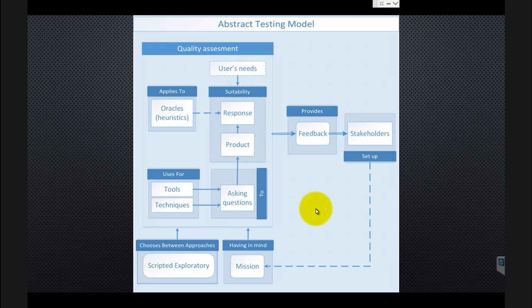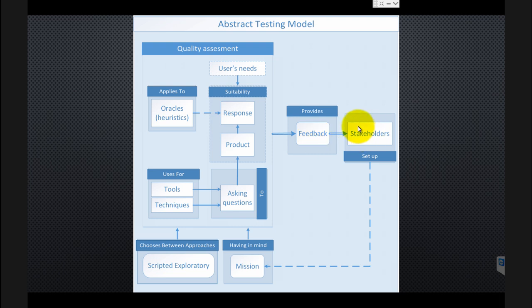The second pitfall is around providing feedback. A tester can do a really great job with the quality assessment and create really good feedback, but then not provide it to stakeholders in time — for example, missing a deadline. Stakeholders are going to make decisions based on this feedback and need it by a certain time. Also, the feedback can be just yes/no — depending on the mission — but that's really poor feedback. You need to provide something that actually helps stakeholders make their decision.